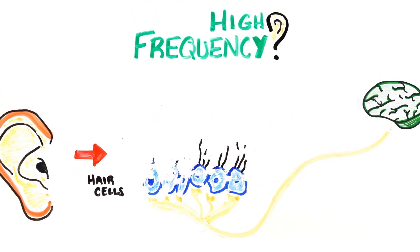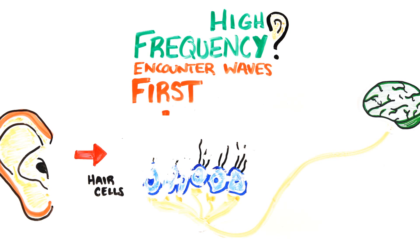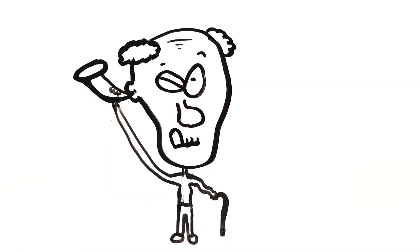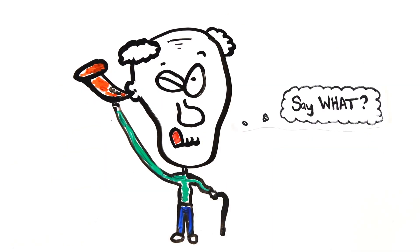So, why do the high frequencies go first? It turns out that the hairs tuned to high pitches are the first to encounter sound waves. As a result, they experience more stress and tend to degenerate earlier. Which is why the older you are, the harder it is to hear high pitches.